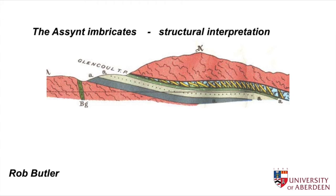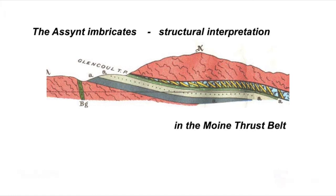Thrust belts can contain major thrust sheets but also lots of little thrusts that we call imbricates. They stack up the stratigraphy and we can see this on this cross section from part of the Moine thrust belt, where underneath that pink thrust sheet, the green, yellow and blue rocks are stacked up into a whole pile of little thrust slices. This video briefs an exercise in structural interpretation of imbricate structures, and we'll use these structures from a section in the Moine thrust belt.